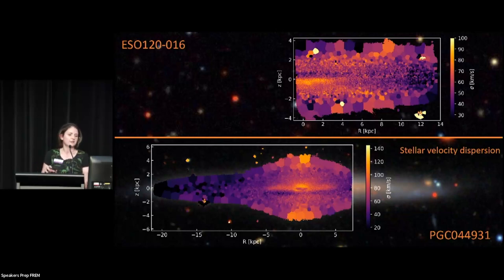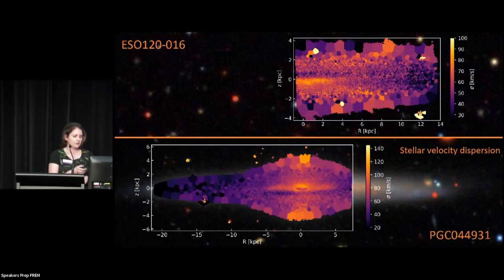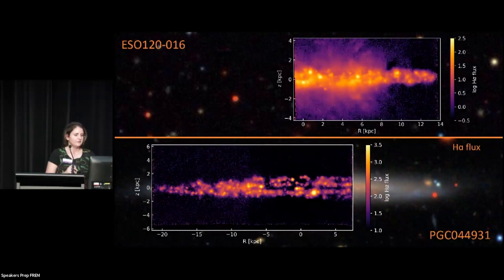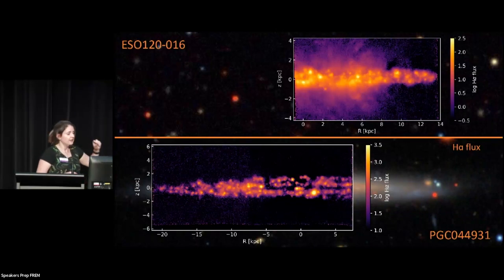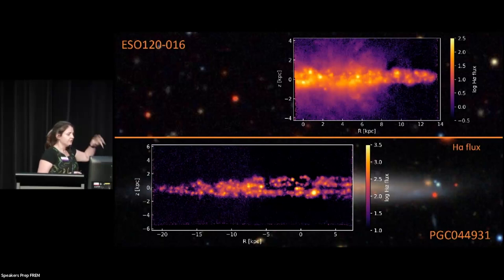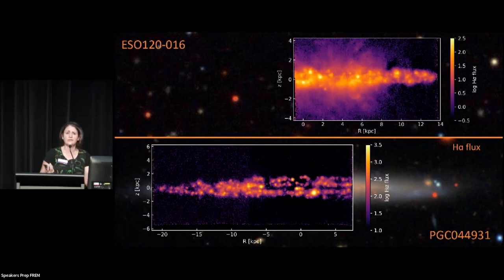That's going to be really exciting to explore, so I'm really looking forward to that. Moving on to the gas: Deanne actually already showed that top picture today — that's the H-alpha map of ESO 120, lots of cool stuff, outflows and more things happening there. The interesting one is the bottom one, the PGC — there are no real outflows, at least that I can see, even though the star formation rates of these galaxies are similar and they're the same mass.